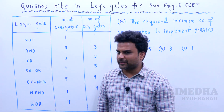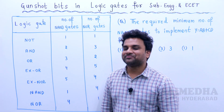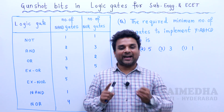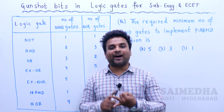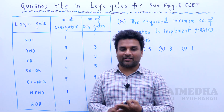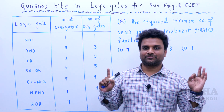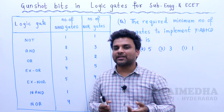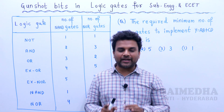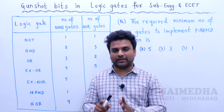What are the basic gates? AND, OR, NOT. Special gates: XOR gate, XNOR gate.